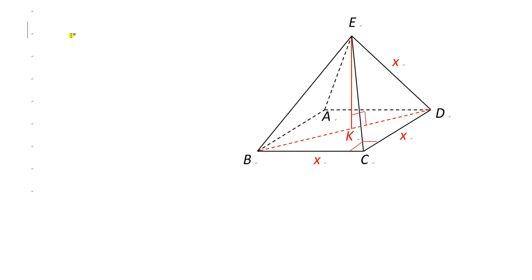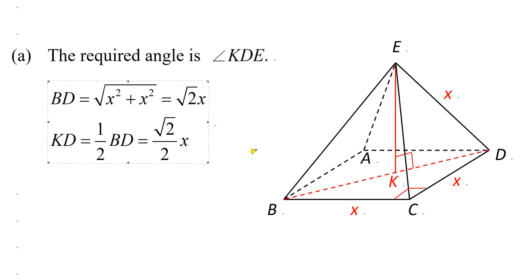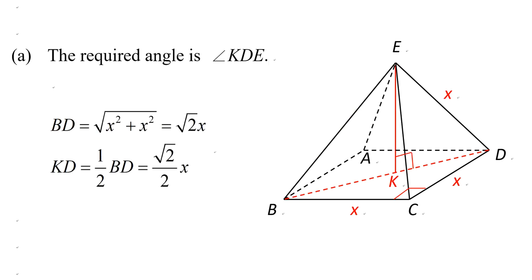The required angle is angle KDE. To find this angle, we let CD = x. We use the Pythagorean theorem to find BD, then divide by 2 to find DK.